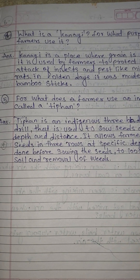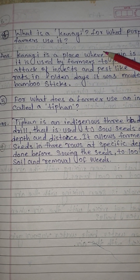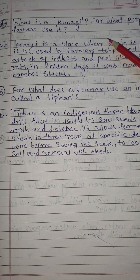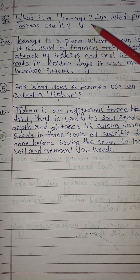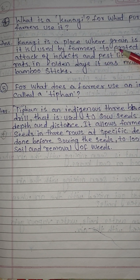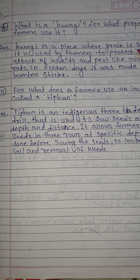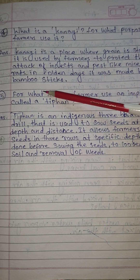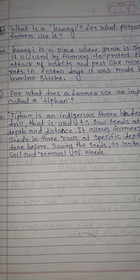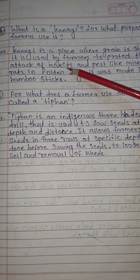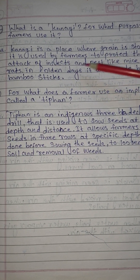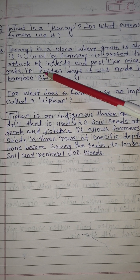Number 4: what is a kanagi? For what purpose do farmers use it? Answer: kanagi is a place where grain is stored. It is used by farmers to protect against the attack of insects and pests like mice and rats.